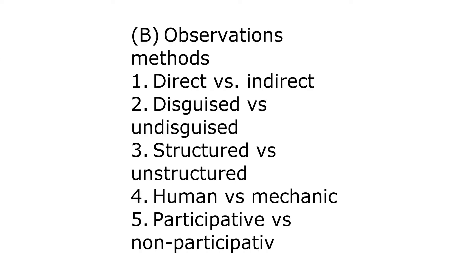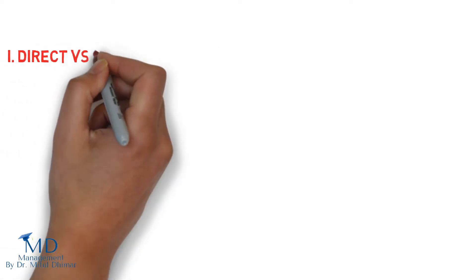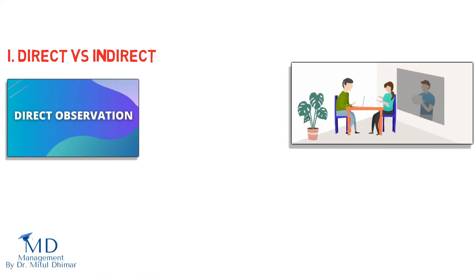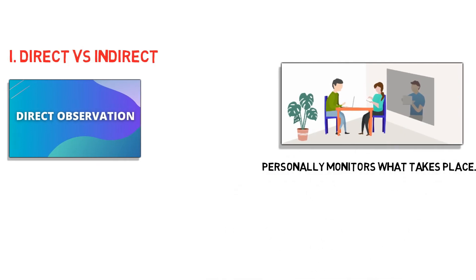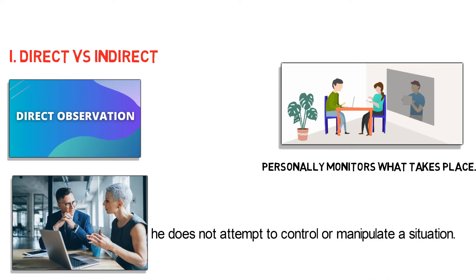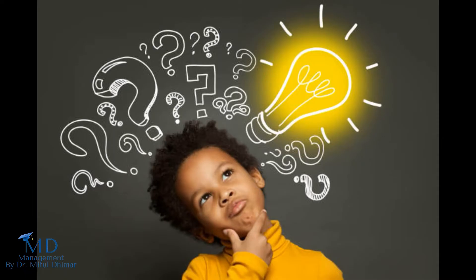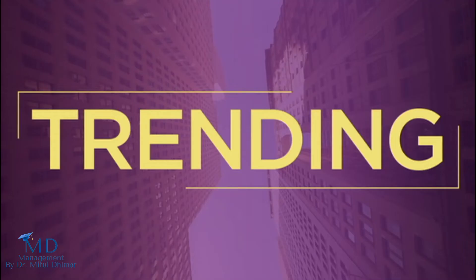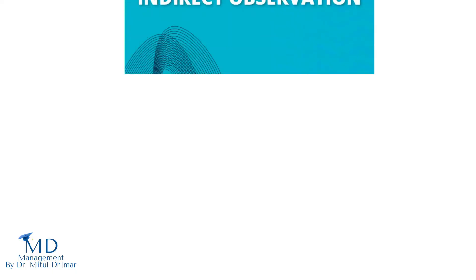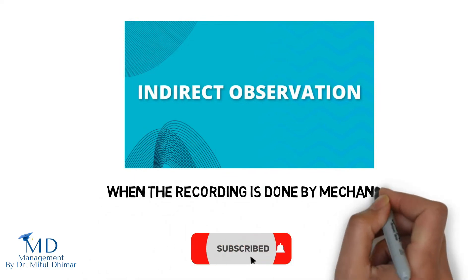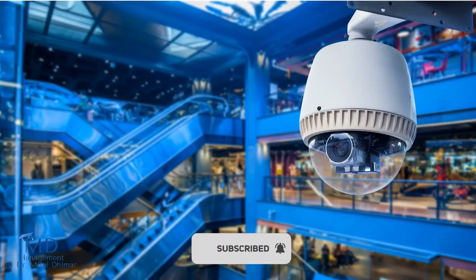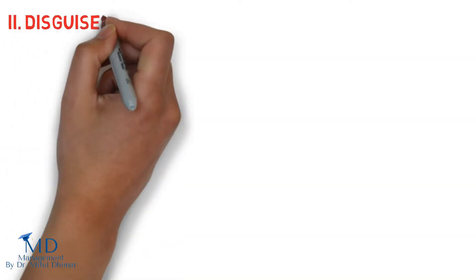We are going to study five types of observation methods. First: direct versus indirect. Direct observation occurs when the observer is physically present and personally monitors what takes place; the observer plays a passive role and does not attempt to control or manipulate a situation. For example, looking at an online list of brand rankings to find information about trending watch brands. Indirect observation occurs when the recording is done by mechanical, photographic, or electronic means — for example, special cameras mounted in malls and shops.